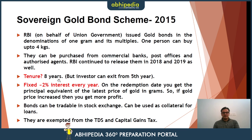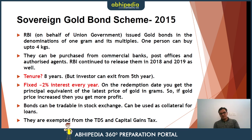The gold bonds are locked in, but after 5 years there is an option to exit. The government, through RBI, promises a 2% interest rate on the value of your gold bond. On the redemption date, you will get the principal equivalent of the latest price of gold in grams. So if gold was worth ₹30,000 when you bought it and is now ₹48,000–₹50,000, you get that higher value plus 2% interest.